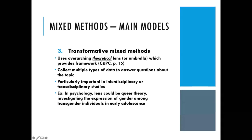Then there are transformative mixed methods designs. These often use an overarching theoretical lens or umbrella to provide the framework. You can collect multiple types of data to answer questions about that topic using that theoretical lens. This is particularly important for interdisciplinary or transdisciplinary studies. For example, in psychology the lens could be queer theory and you might be investigating the expression of gender among transgender individuals in early adolescence — but you really start with that theoretical lens before moving into data collection.